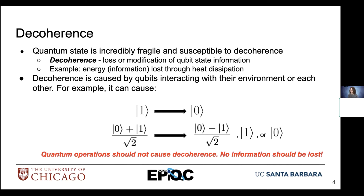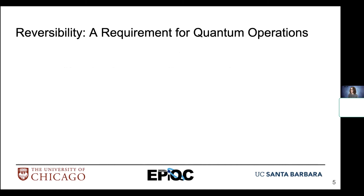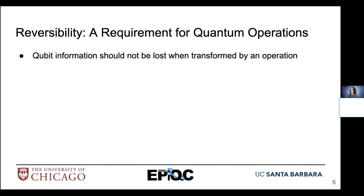So we want to take quantum operations and make sure that whenever they transform quantum state, they do so in a lossless manner — we don't want any information lost by this transformation. So we have introduced a new requirement for quantum computations: quantum computations have to be reversible. What does that mean exactly? It means that qubit information shouldn't be lost when transformed by an operation — we don't want any sort of decoherence, we don't want our superimposed state to somehow evolve into a mysterious state that we no longer know.